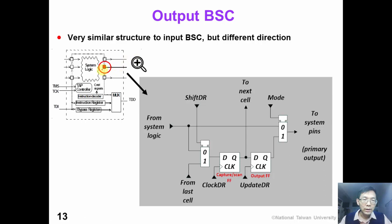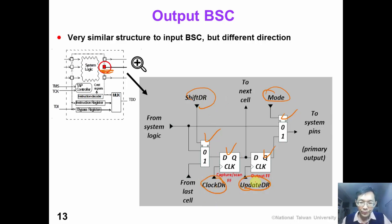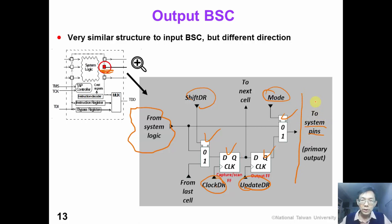Now let's look at the other side: the output boundary scan cell. On the upper left figure we zoom in on this square. We can see that the output boundary scan cell is actually very similar to the input boundary scan cell in structure. It also has two flip-flops, two MUXes, two control signals, and two clocks. The only difference is that now the system logic is on our left and the system output pin is on our right, so the direction is opposite to the input boundary scan cell.